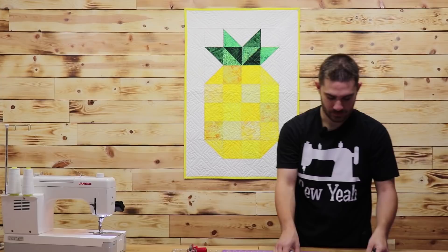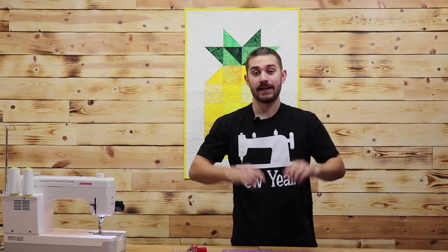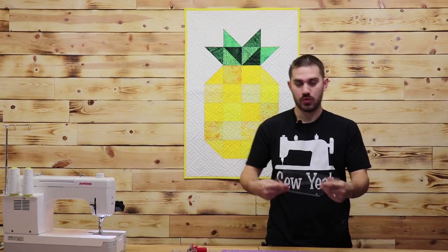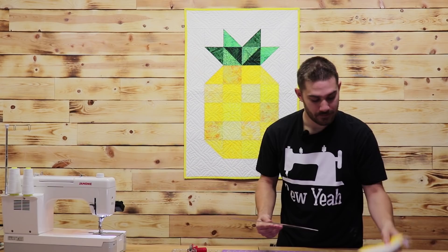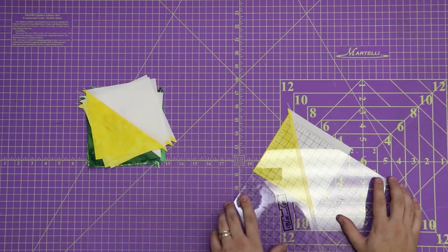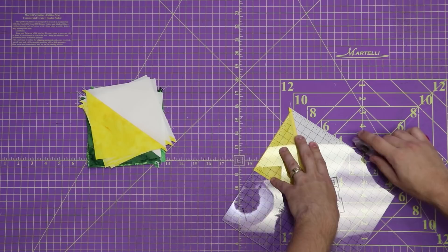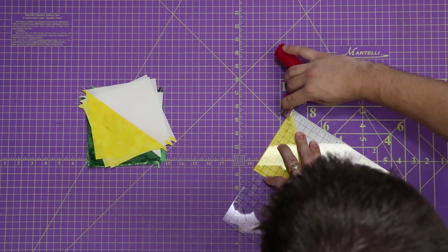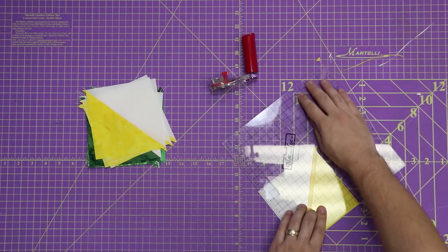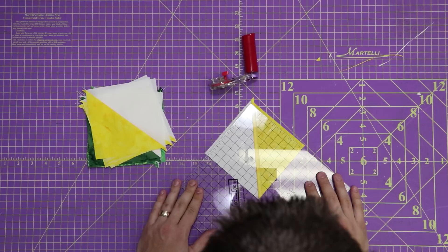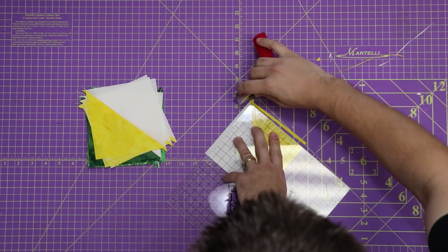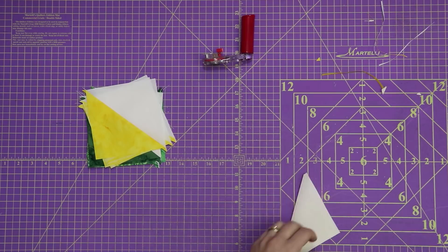Just like that we have our half square triangles sewn and ironed. It's time to square them up. I'm going to grab a square up tool or a square ruler here and we're going to be squaring all of these down to five by five squares. The first thing I'm going to do is take a little bit off the top two sides here. I'm going to turn this all the way around and put this back into the center so everyone can see. Then I'm going to line up my two five inch marks. That way I have a perfectly square five inch half square triangle block. Just like so. I'm going to keep doing this, get them all cut out and we'll be right back.